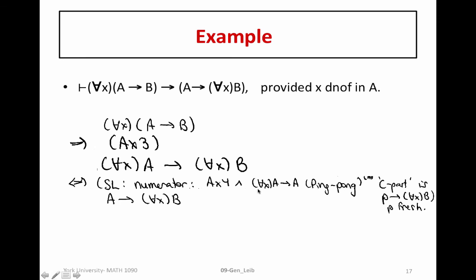So by ping-pong argument, since we know both directions, A implies for all X, A, and for all X, A implies A, using the ping-pong argument, we know that they are equivalent. So that means we can substitute one for the other.